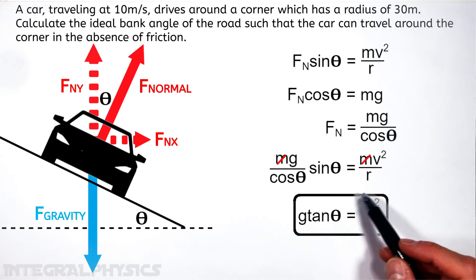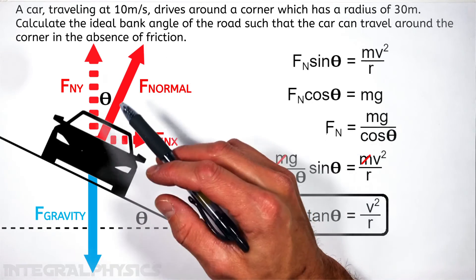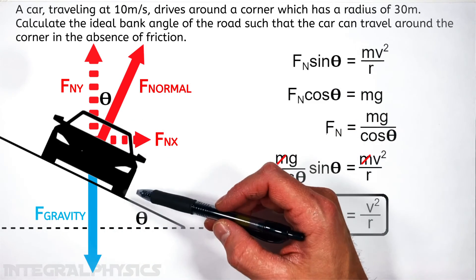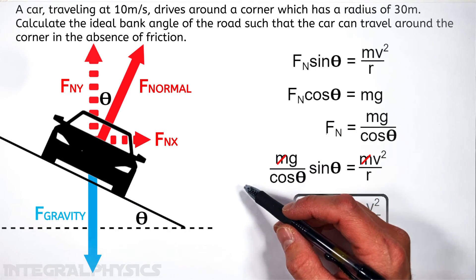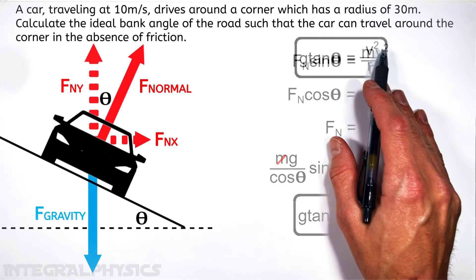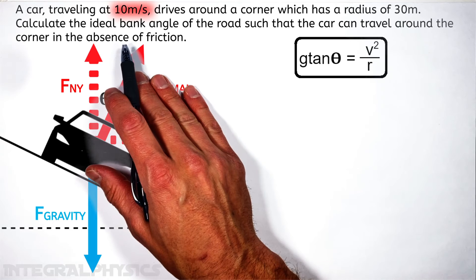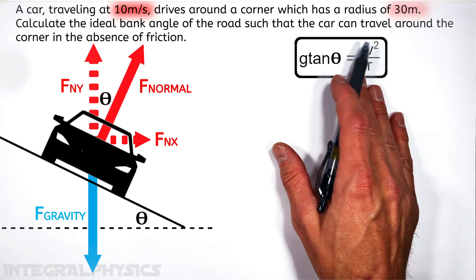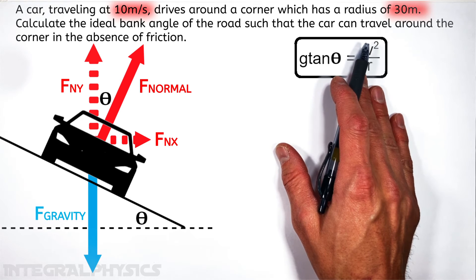Now this is a very general equation that relates the velocity of the car to the radius of the road, as well as the bank angle of the road, and gravity. So if we want to solve our problem, we've got a car which is traveling at 10 meters per second, that's going to be our velocity, around a corner with a radius of 30 meters, that's going to be r, the radius.